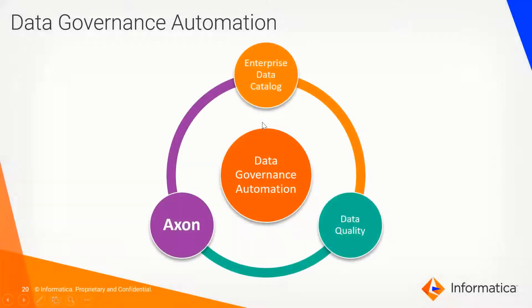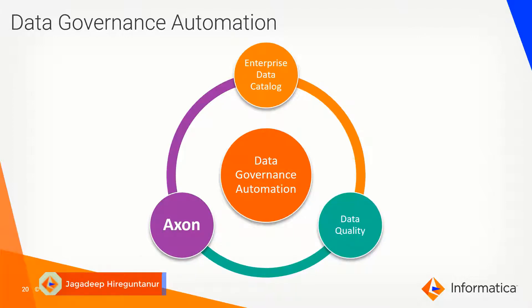We have been hearing about data governance automation. I will quickly walk through the process of how this automation works and what the different things are that are done by Axon, Enterprise Catalog, and Data Quality, and what will be the eventual outcome.